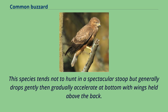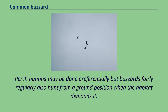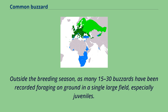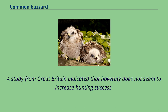Sometimes the buzzard also forages by random glides or soars over open country, wood edges or clearings. Perch hunting may be done preferentially, but buzzards fairly regularly also hunt from a ground position when the habitat demands it. Outside the breeding season, as many as 15–30 buzzards have been recorded foraging on the ground in a single large field, especially juveniles. Normally the rarest foraging type is hovering; a study from Great Britain indicated that hovering does not seem to increase hunting success. A high diversity of rodents may be taken given the chance, as around 60 species of rodent have been recorded in the foods of common buzzards.